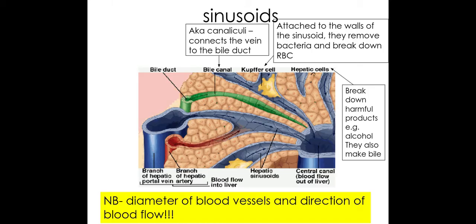You really need to be aware of the direction of blood flow and bile flow, and also the lumen size of the different vessels involved, in order to be able to identify what is what.